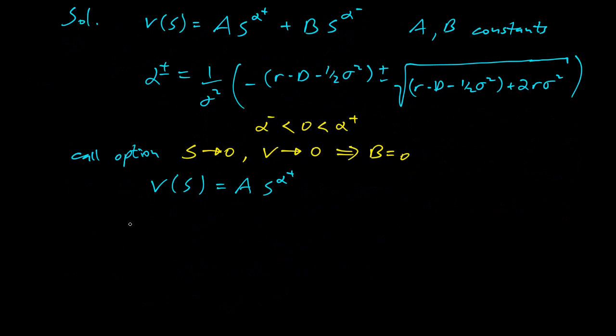So now we have V of S equals A S alpha plus. And what happens at expiration time? So when we exercise the option, we get some payoff. And our strategy is going to be to wait for some preset price, S star, and then exercise when we hit that. What other strategy could you have? That's basically the only strategy. And just the question is, what is S star? How high do I wait for the stock to go before I exercise?